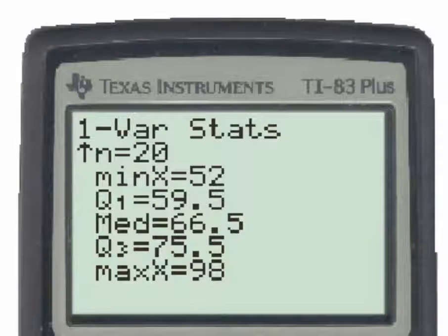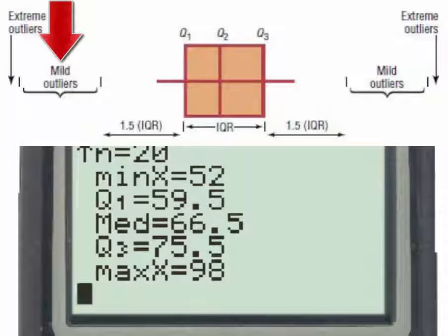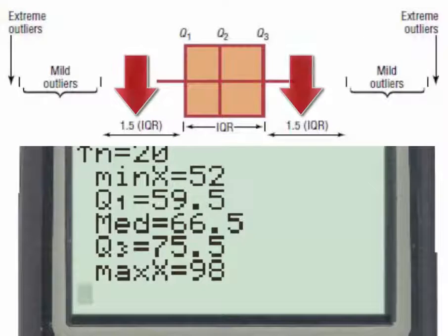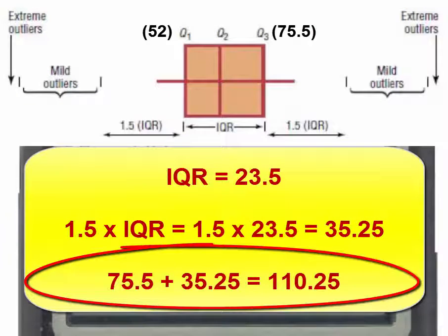To find the values beyond which we would find the lower outliers and upper outliers using the one-and-a-half times the IQR rule, we would take one and a half times the interquartile range and add it to Q3 to find the upper value, so that above this value we would have outliers.